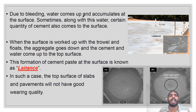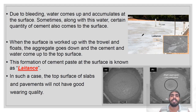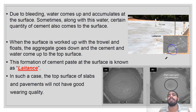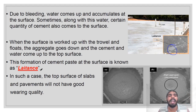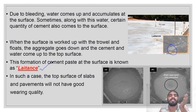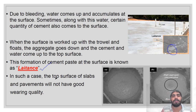Due to bleeding, water comes up and accumulates at the surface, and sometimes certain cement also comes to the surface, forming a cement paste known as laitance. When the surface is worked up with trowel and floats, the aggregate goes down and cement and water come to the top. This means the top surface of slabs and pavements will not have good wearing quality.